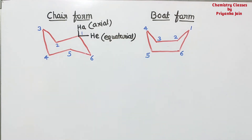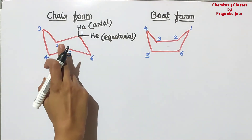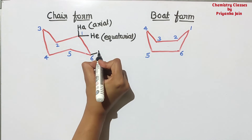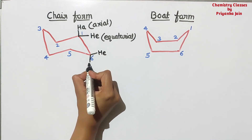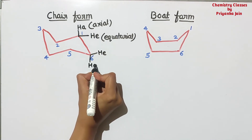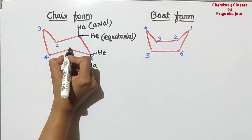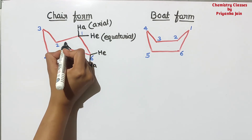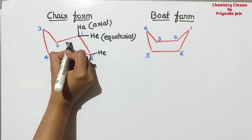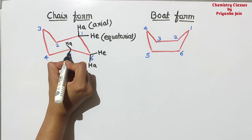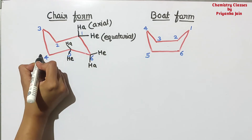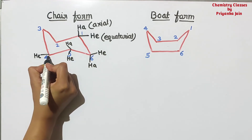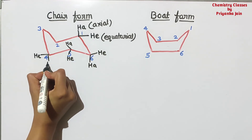At each carbon atom there are two types of hydrogens: one equatorial, one axial. Similarly at each position — this is axial and this is equatorial; this is equatorial and this is axial.